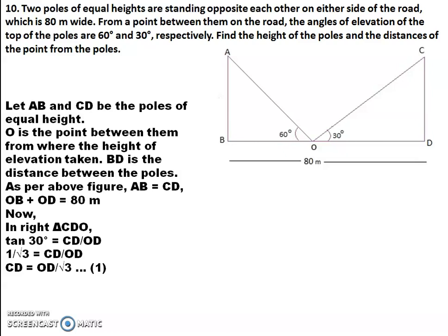Let AB and CD be the poles of equal height. O is the point between them from where the angles of elevation are taken. BD is the distance between the poles. As per the figure, AB equals CD — this is given in the question. Also, OB plus OD equals 80 meters, which is the 80-meter wide road given in the question.